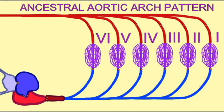There is also a branch which goes into the head region forming the internal carotid artery and this is thought to be the ancestral pattern for the aortic arches.